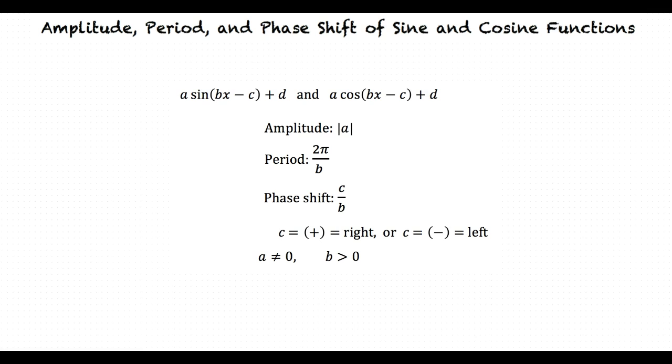We assume that a is non-zero and b is greater than zero. Also, c and d can be all real numbers. If c and or d is zero, then there is no phase shift.